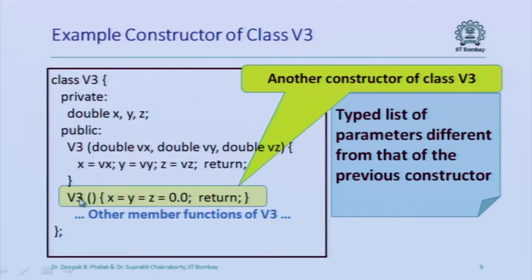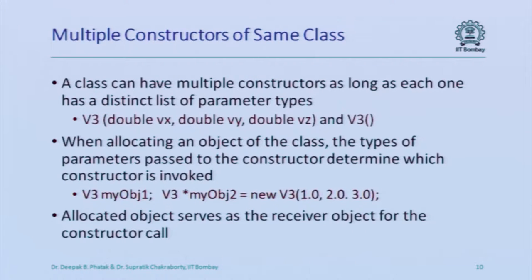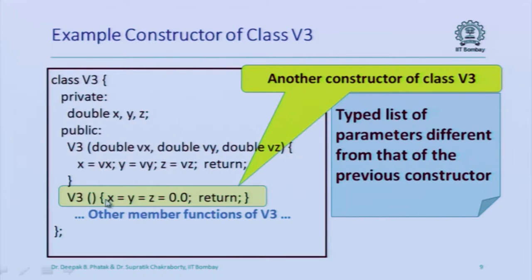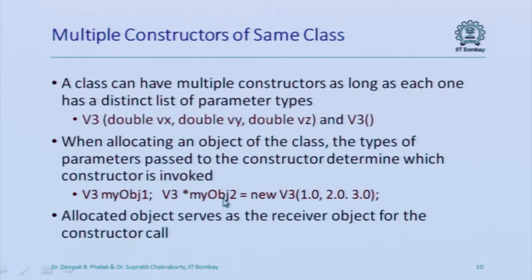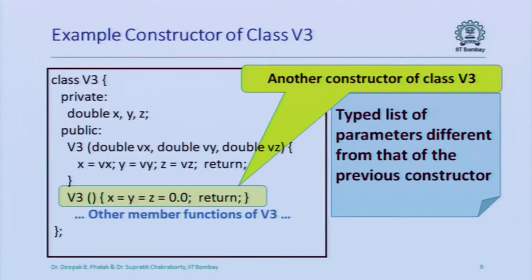If there are multiple constructor functions, will there be confusion about which one to invoke immediately after allocating an object? That is not the case. If you are allocating myobj1 of type V3 and have provided no parameters, the constructor that does not require any parameters will get invoked. But if you say myobj2 is new V3 with some parameters, the constructor that accepts three double-valued parameters will get invoked, because it is the only constructor of V3 that can accept three double-valued parameters.